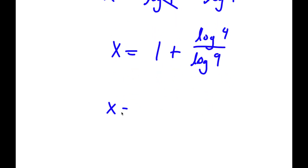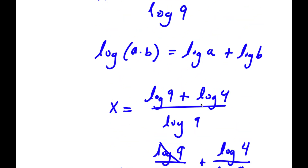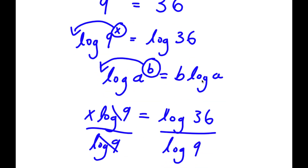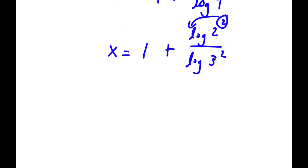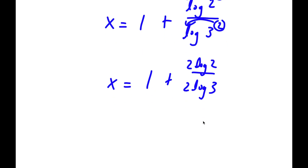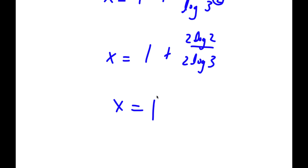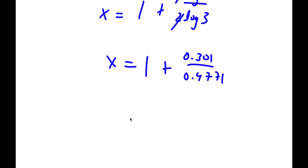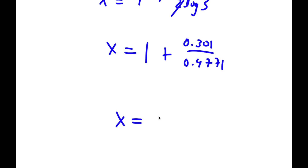Now log 4 is the same thing as log 2 squared, and log 9 is the same thing as log 3 squared. Remember, if I have something in the form log a to the power of b, this is equal to b times log a, so I can move both of these to the front. So now I have x is equal to 1 plus 2 log 2 over 2 log 3. The 2s cancel out, and log 2 equals 0.301 and log 3 equals 0.4771. Solving this gives x is equal to 1.631.